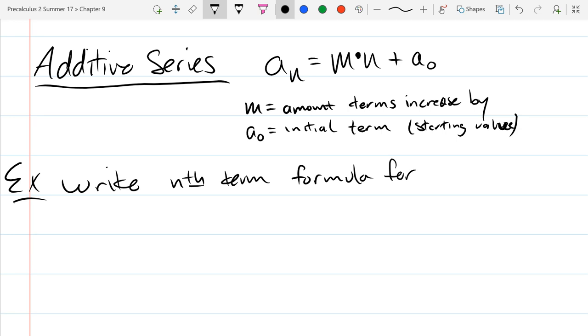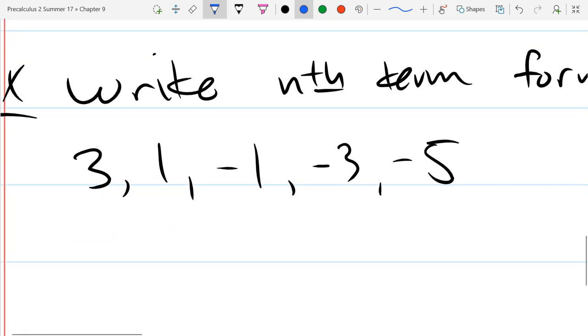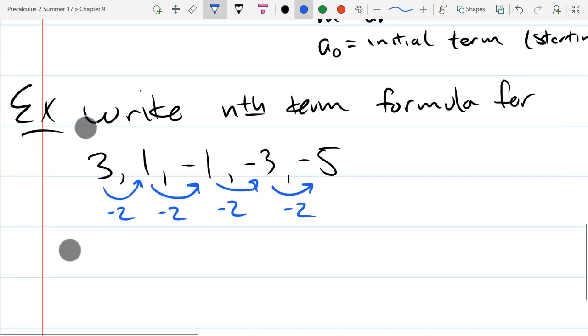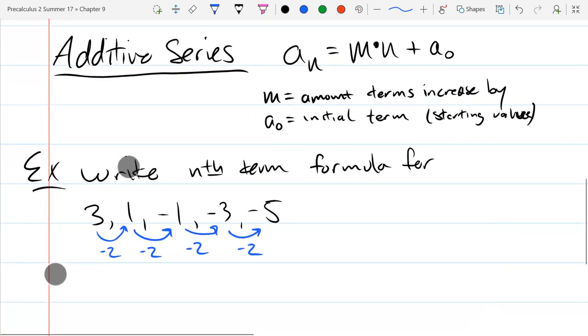So that's an additive series. Let's look at an example of an additive series. So I'm going to write a term formula for the series 3, 1, negative 1, negative 3, negative 5. This better be an additive series because I just described what an additive series looks like. Let's examine this series and see if it's actually additive. What does it take to go from one term to the next? Well, to go from 3 to 1 I subtract 2. To go from 1 to negative 1 I subtract 2. Subtract 2, subtract 2. So the pattern is decrease by 2 each time, or increase by negative 2 however you want to think of it.